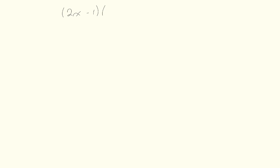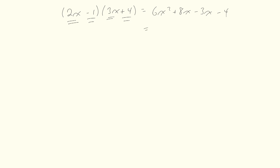Most binomial multiplication we'll do is fairly simple, but consider (2x − 1)(3x + 4) — two binomials that happen to have coefficients. The pattern is exactly the same: 2x times 3x is 6x squared; 2x times 4 is positive 8x; negative 1 times 3x is minus 3x; and negative 1 times positive 4 is minus 4. Collecting the middle terms gives 6x squared plus 5x minus 4.